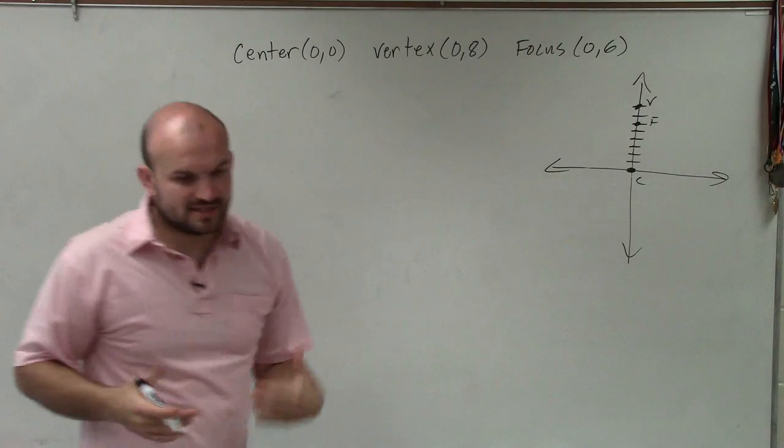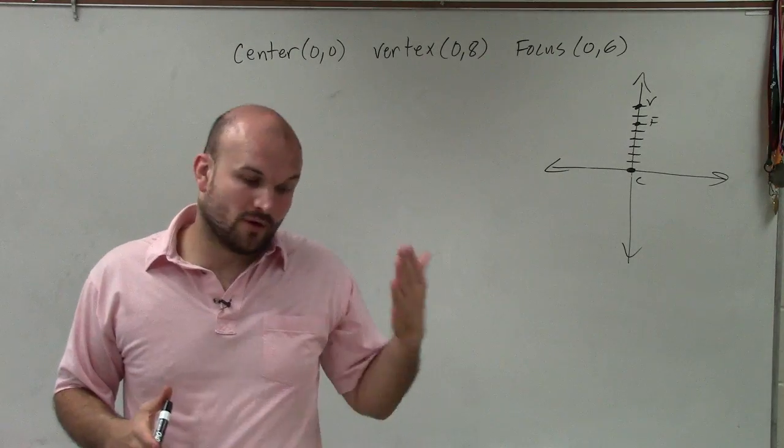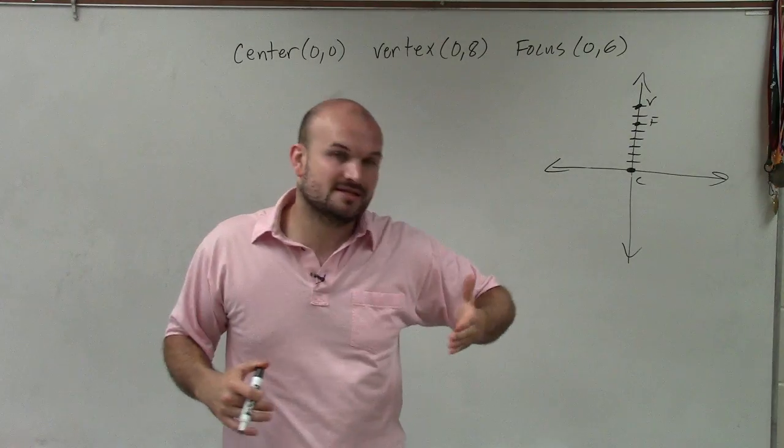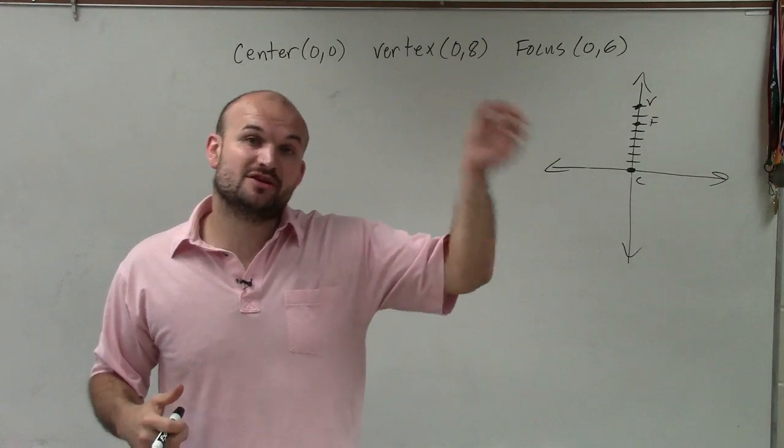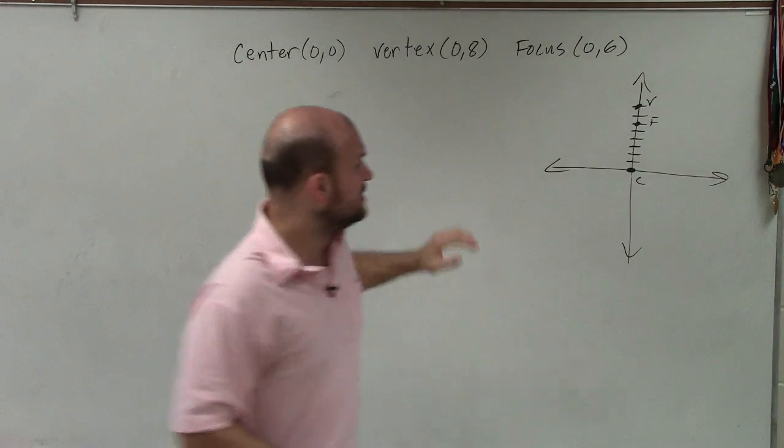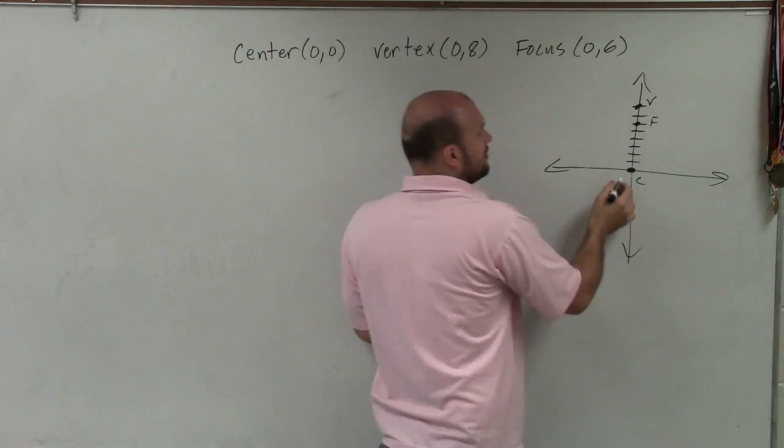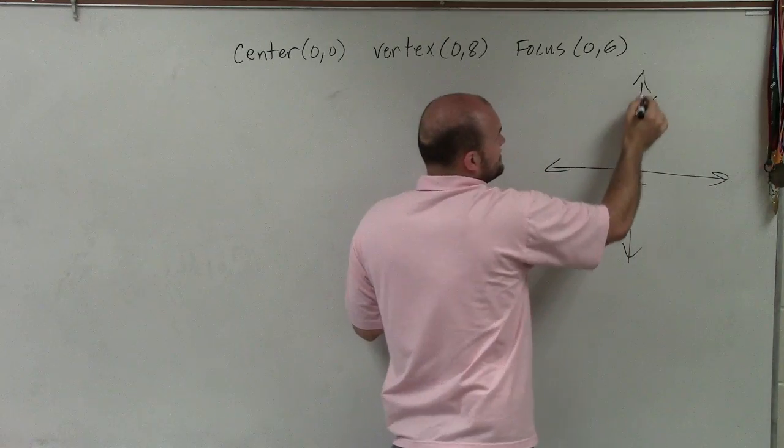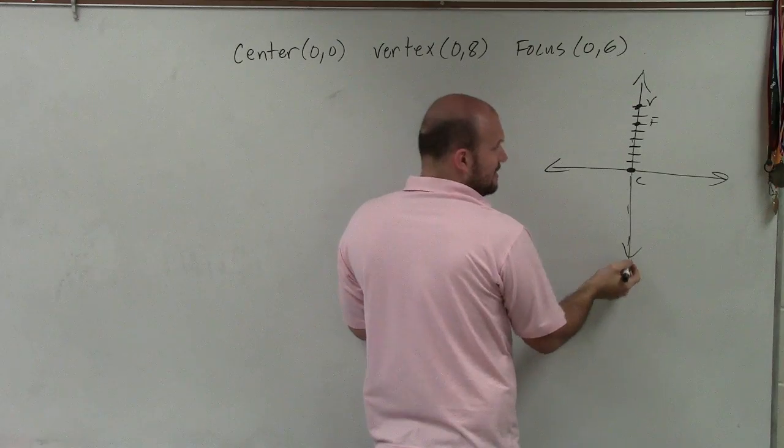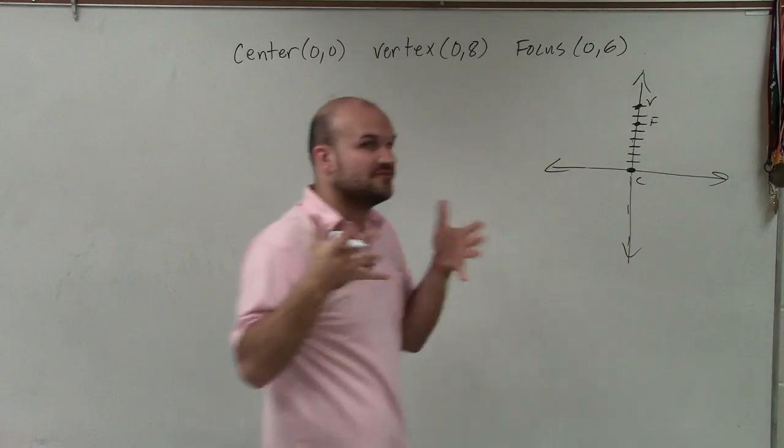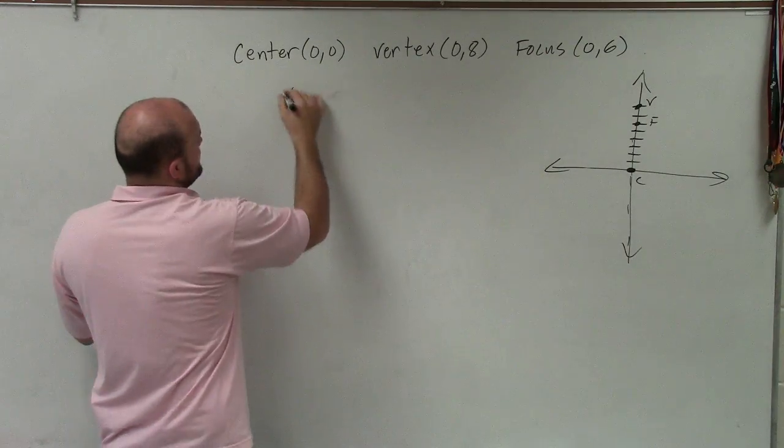So it's very important for us to understand that the major axis—what lies on the major axis? That is going to be your vertices, your foci, and your center. So therefore, since all three of these points have to lie on the major axis, you can see that this major axis is the y-axis. And therefore, it's vertical. And when it's vertical, we write the equation of the ellipse like this.